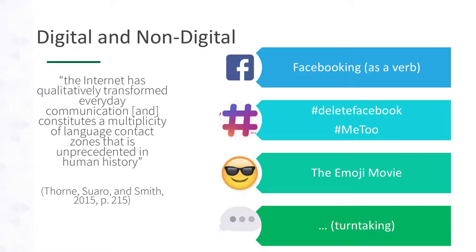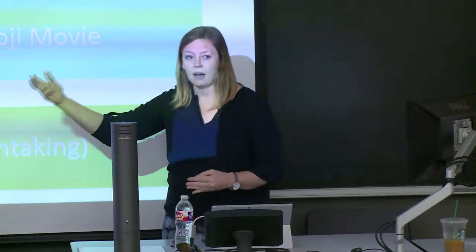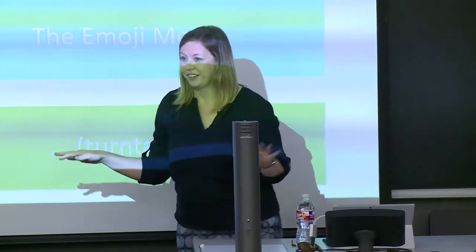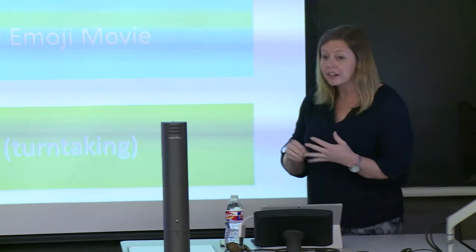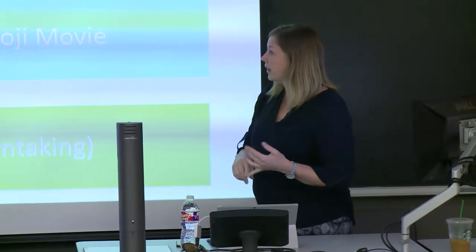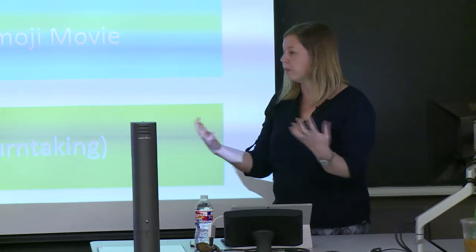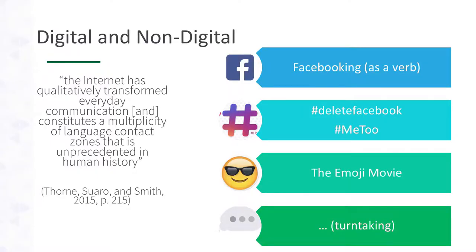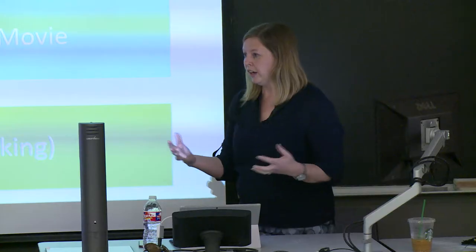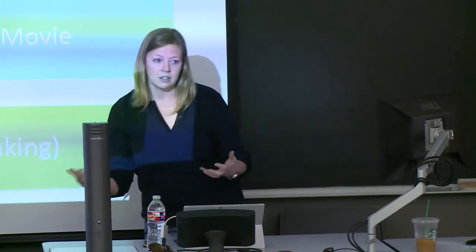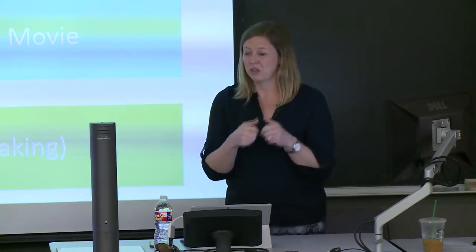One example is Facebooking as a verb — ten years ago that didn't even exist as a word, and now it is an inherent part of digital and non-digital discourse. Facebook doesn't just happen on Facebook; Facebook happens everywhere. Hashtags — I would argue, though the analysis isn't quite done — are the number one marker of pragmatic behavior in electronic discourse. It's the way we mark sociopragmatics, the way we mark context, the way people categorize themselves with other groups. Some salient hashtags with really high-stakes consequences: Delete Facebook, the Me Too movement. But there are also neutral hashtags that mark context and give us more insight into the actual text or image.